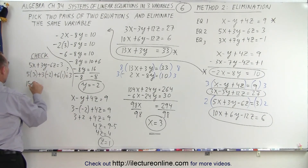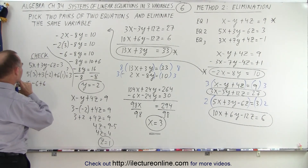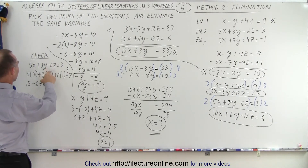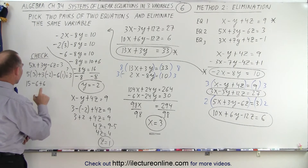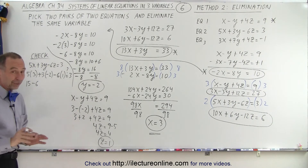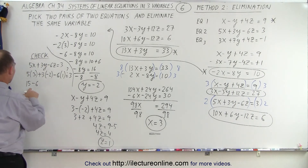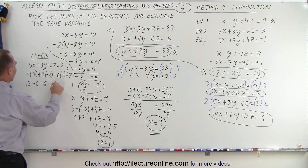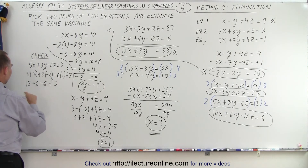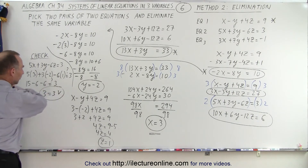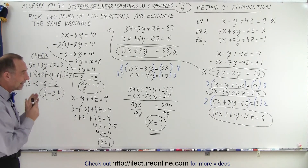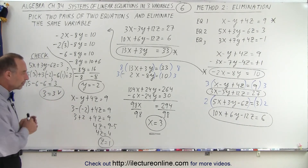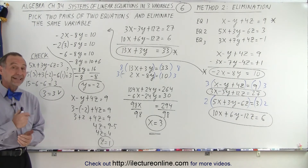We end up with 15 minus 6 plus 6 — but wait, there's a mistake. It's minus 6z, so that should be minus 6 times 1. So 15 minus 6 minus 6 equals 3, question mark. That's minus 12 subtracted from 15: 3 equals 3. Sure enough, it works out. And that's how you check — just to make sure the values you obtained for your variables are the exact values.